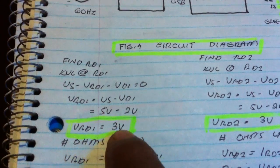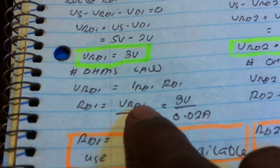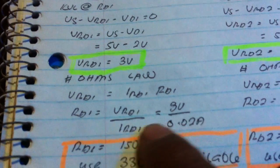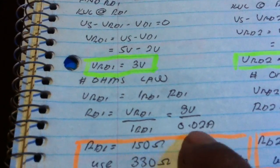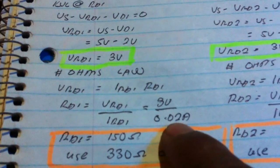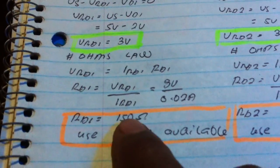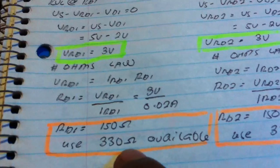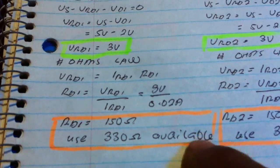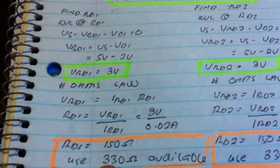We get the voltage drop at the resistor as 3 volts. Using Ohm's law — 3 volts divided by the LED current of 0.032 amperes (given by the datasheet) — we get 150 ohms. But I use 330 ohms, which is my available resistor, and that is acceptable.